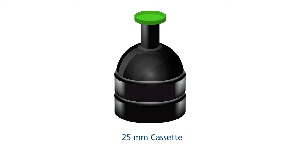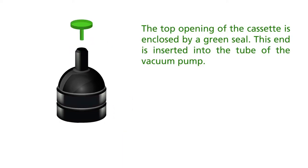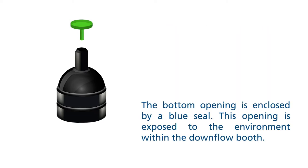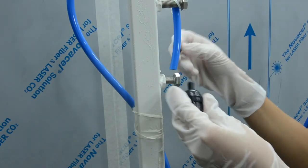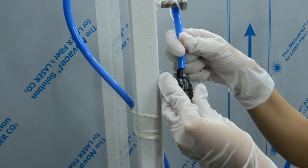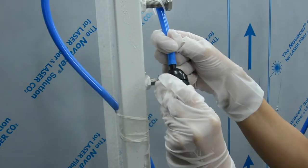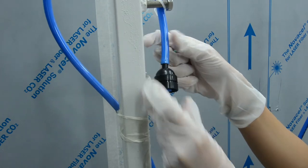The cassette contains two filters inside and has two openings. The one at the top is enclosed with a green cover — this end is inserted into the tube of the vacuum pump. The other opening is sealed with a blue cover; this part is responsible for drawing air towards itself, enabling the filtration cassette to detect the number of particulates found in the air.